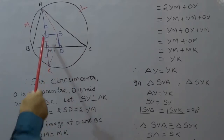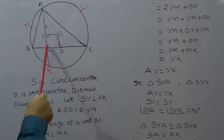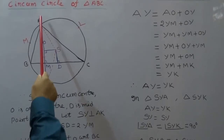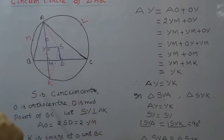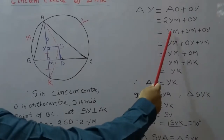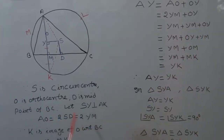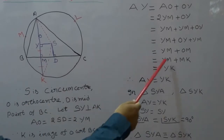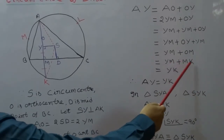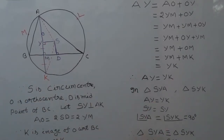Since K is the image of O with respect to side BC, M is the midpoint of OK and OM is perpendicular to BC, so OM equals MK. Now AY equals AO plus OY. Since AO equals 2YM, we have AY equals 2YM plus OY, which equals YM plus YM plus OY, equals YM plus MK. Therefore YM plus MK equals YK, hence AY equals YK.